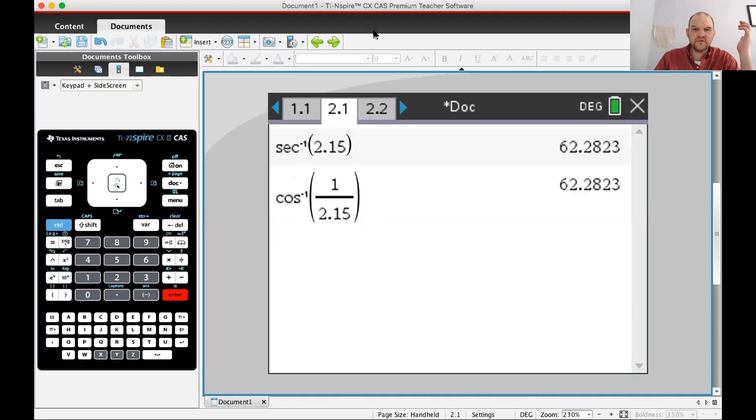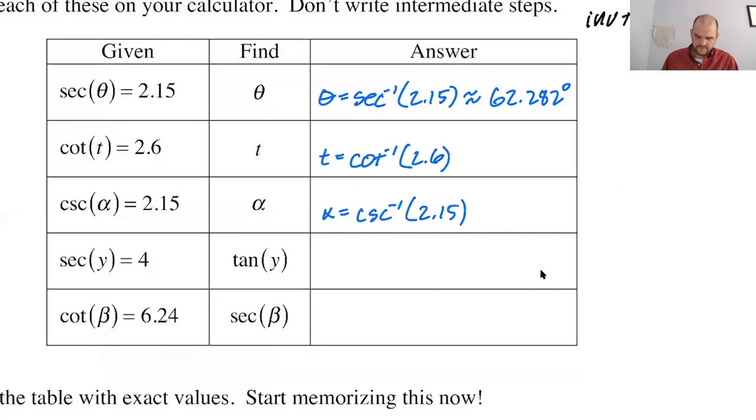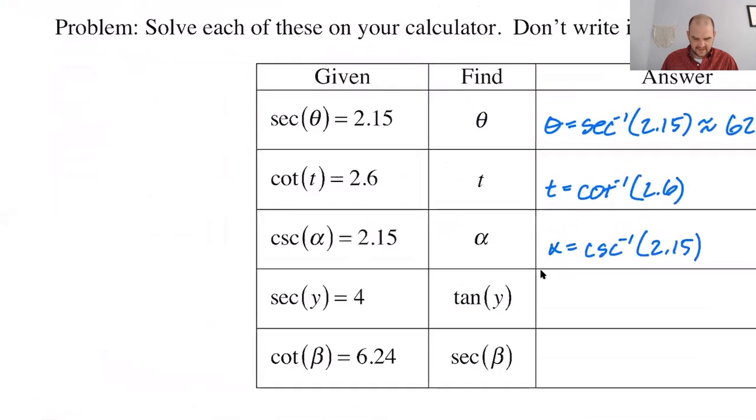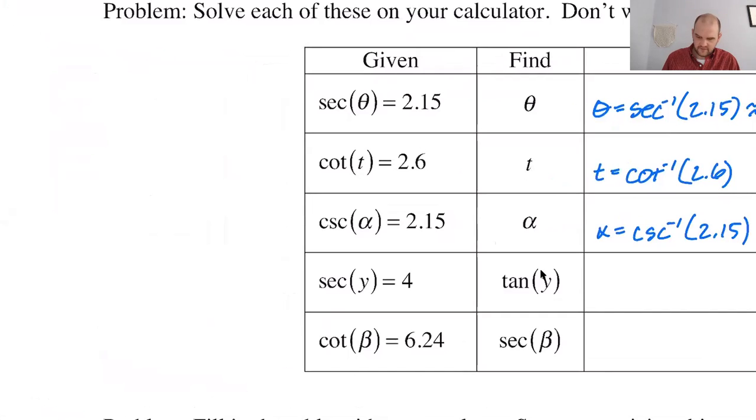So in the original problem, let me flip back. In the original problem, we had secant of theta equals 2.15, but think about what you know. You know that secant, so if you have secant of theta, it is 2.15. Secant is 1 over cosine, so 1 over cosine of theta is 2.15, which means that the cosine of theta is 1 over 2.15.